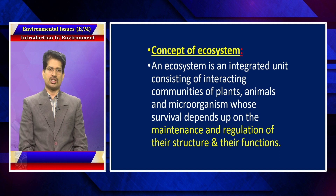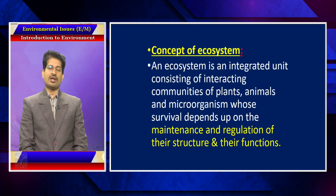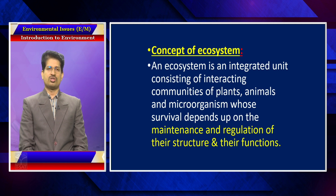An ecosystem has a structure, which is divided on the basis of trophic levels. Each trophic level is divided based on the mode of acquiring nutrition. Each trophic level and each species in an ecosystem has got a function. If you understand why the ecosystem is divided into structure and function, you will clearly understand the importance of an ecosystem, the importance of trophic levels, and the importance of biodiversity.